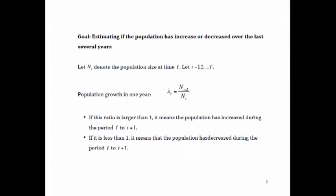We've been hearing that populations are going down, and the lambda method is one of the popular ones we've been looking at. If nt is the population size at time t, then the population growth in one year is given by the ratio nt+1 divided by nt — that is lambda. If lambda is bigger than 1, the population has gone up; if smaller than 1, it has gone down.